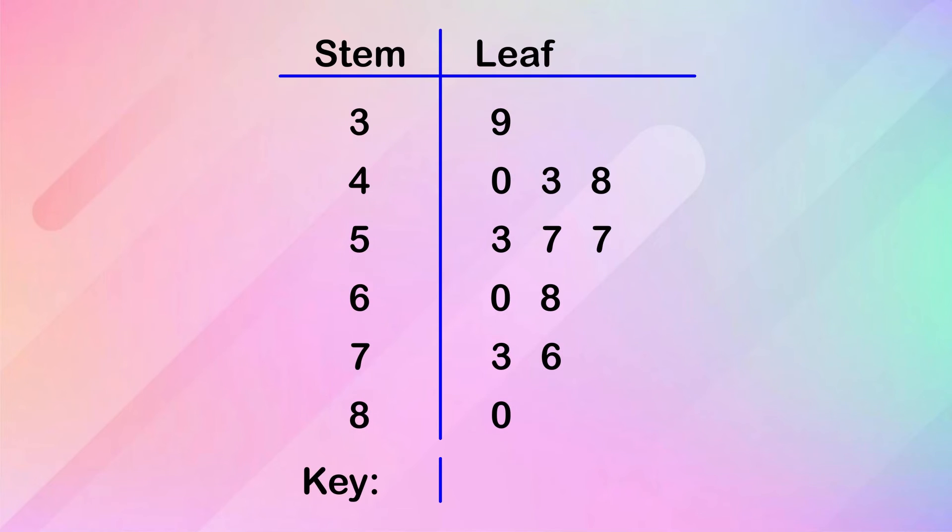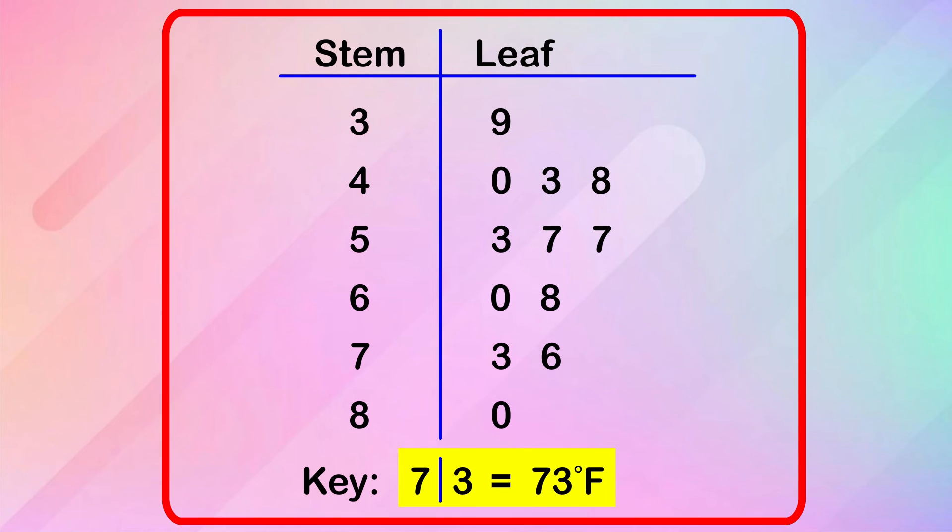Let's make our key now. We'll pick a value from the stem. Let's take 7. We'll choose a value for the leaf. Let's take 3. So this is our key: 7, 3, 73 degrees Fahrenheit. So our stem and leaf plot looks something like this.